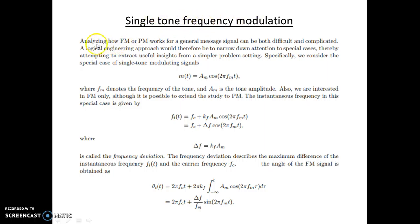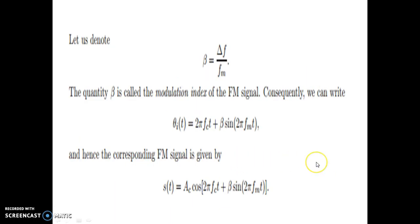Next we look at single-tone frequency modulation, which applies to both FM and PM where only one tone is used. M(t) is defined as AM cos(2π f_m t), where f_m is the frequency of the tone and AM is the amplitude. The frequency deviation Δf equals K_F × AM. The modulation index β is defined as β = Δf / f_m, where Δf is the frequency deviation and f_m is the modulating frequency.